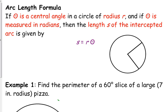So our arc length formula, here are some words. If theta is a central angle in a circle, radius r, and if theta is measured in radians, that is a key. It must be in radians.